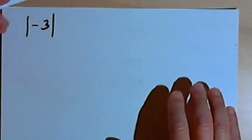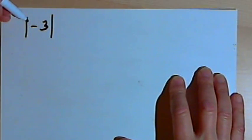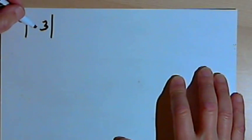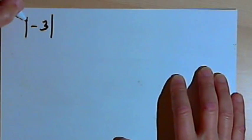So let's start with this expression. Here what I've got is two vertical bars, and in between those vertical bars I've written negative 3. Now this is written as the absolute value of negative 3. The vertical bars are written as the absolute value.